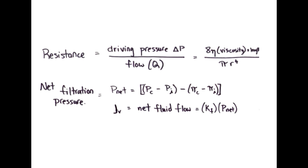What is the equation of resistance? The equation of resistance is the driving pressure, which is denoted here by delta P, over the flow, which is denoted here by the letter Q. And resistance can also be said to be viscosity times the length over pi r to the fourth power.